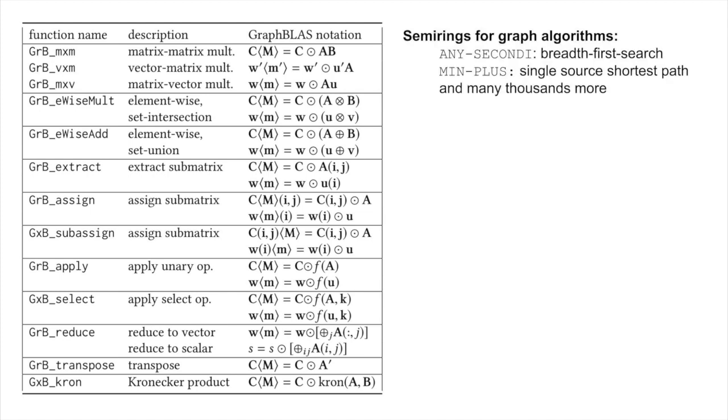Different semi-rings appear in different graph algorithms. The BFS relies on the any-second-i semi-ring. The shortest path problem uses the min-plus semi-ring.